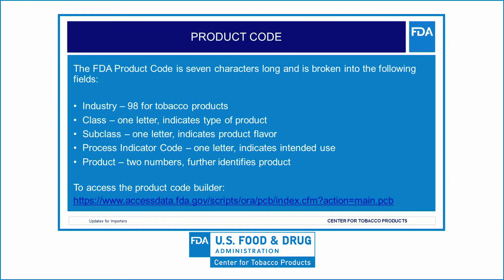Subclass: the fourth character of the FDA product code, always a letter; for tobacco products, the subclass code is used to categorize the flavor of the product. Process indicator code: the fifth character of the FDA product code for tobacco products, always a letter; for tobacco products, the process indicator code describes the intended use of the product. The intended use can be either for consumer use, for further manufacturing, or for investigational use.